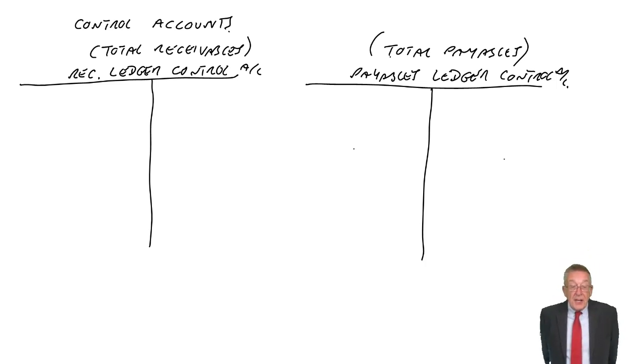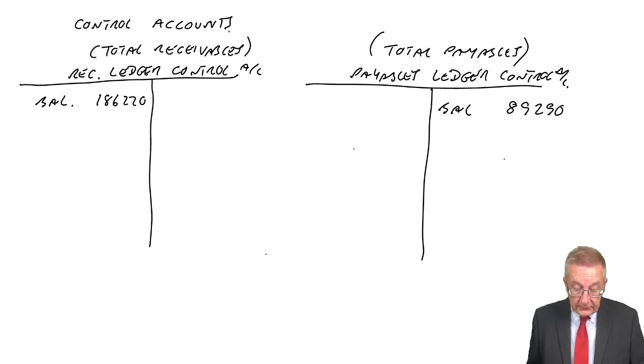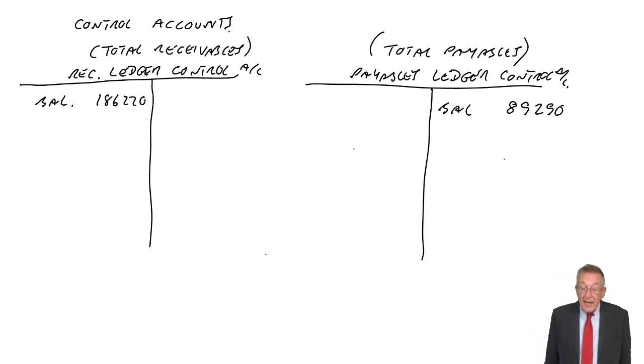Let's see what we've got. We're told, firstly, the balances at the start of the month. So on receivables ledger control, there's a debit balance of 186,220. Of course it's a debit balance, it's receivables, would you not expect to start with a debit balance? Similarly, at the start of the month, the balance on payables is a credit balance, 89,290.